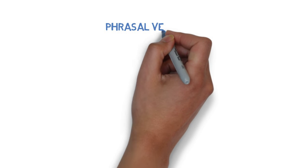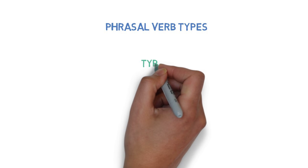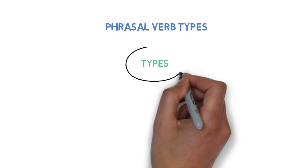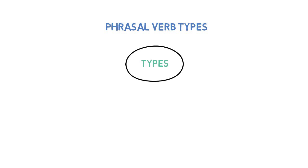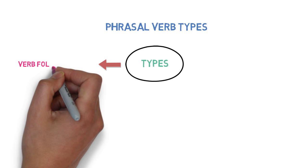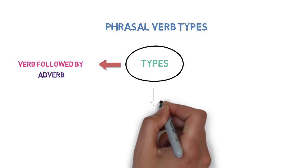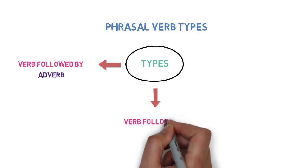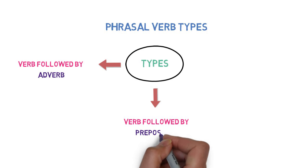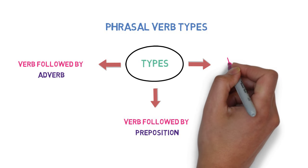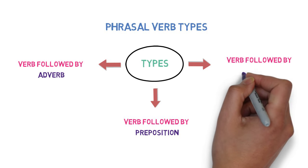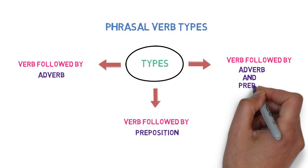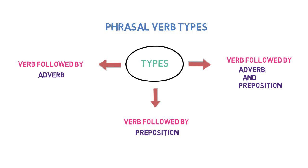Now, based on other words in the group, we have divided phrasal verbs into three types. First is verb followed by adverb. Second is verb followed by preposition. And third is verb followed by adverb and preposition. Let's look into examples of each of these types to make things clear.